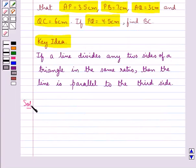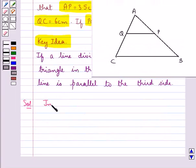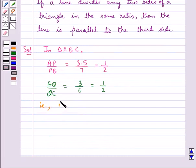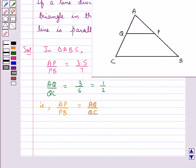Now let's move on to the solution. In triangle ABC we have AP upon PB is equal to 3.5 upon 7, which is equal to 1 upon 2. Then AQ upon QC is equal to 3 upon 6, which is equal to 1 upon 2. So we say that the line PQ divides the two sides AB and AC of triangle ABC in the same ratio.